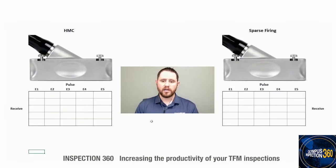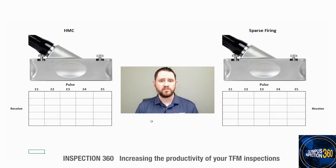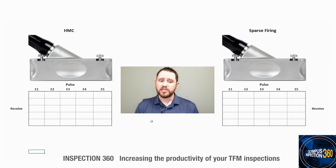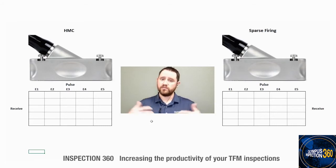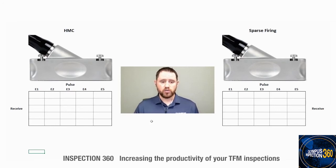Let's begin with a brief explanation on how the sparse firing mode works on the OmniScan X3. In a typical TFM inspection, we utilize FMC — or full matrix capture — as the means of pulsing and receiving signals from a phased array transducer. One of the questions we often get with sparse mode is whether this is a form of HMC or half matrix capture, and the answer to that is no. In a typical FMC process, we fire one element of the transducer and we receive with everything.